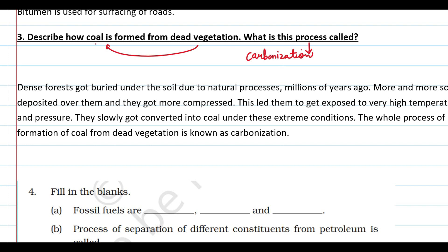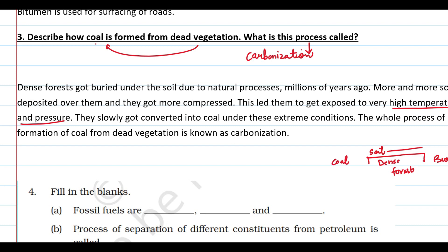More and more soil got deposited over the buried dense forests. The whole layer of soil accumulated, causing more compression on the forests. Due to high temperature and pressure, they started converting into coal under extreme conditions. This whole process of formation of coal from dead vegetation is known as carbonization.